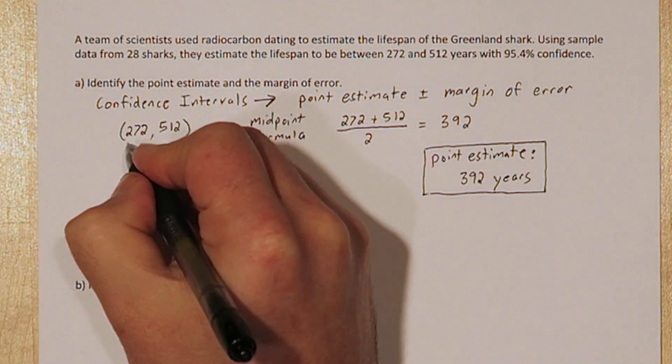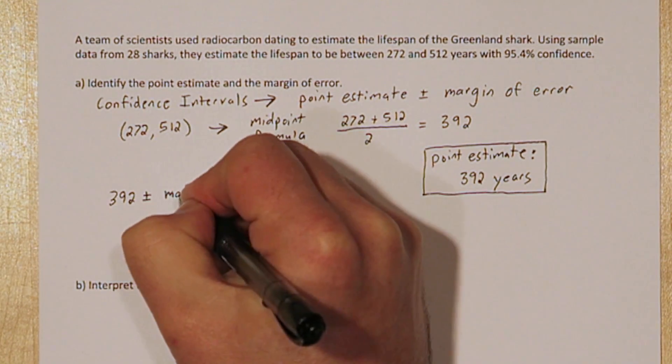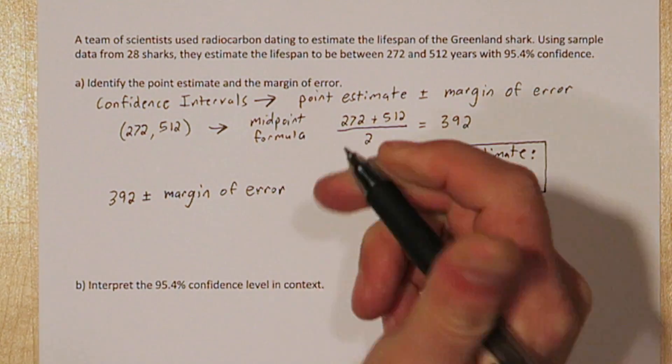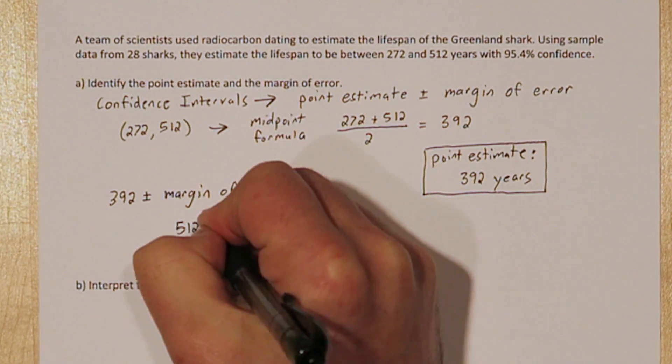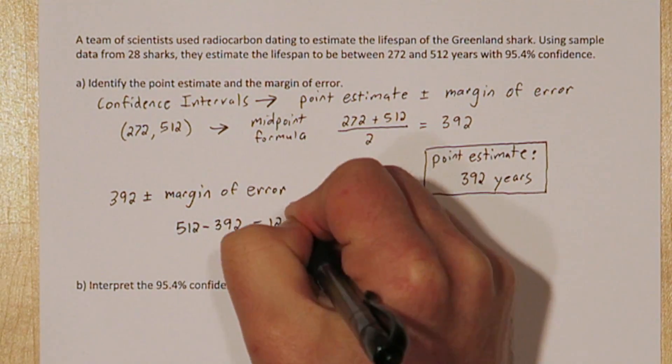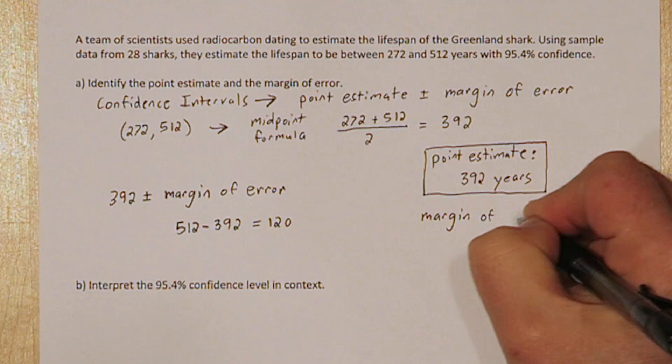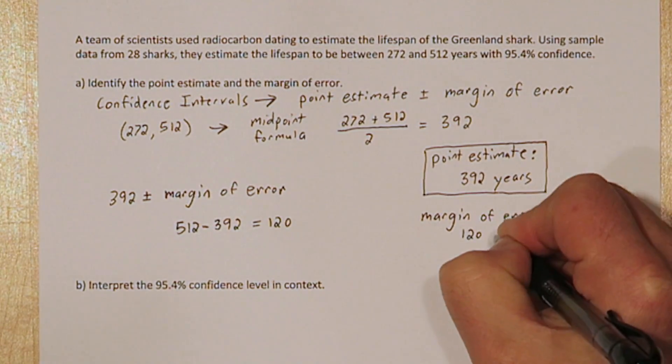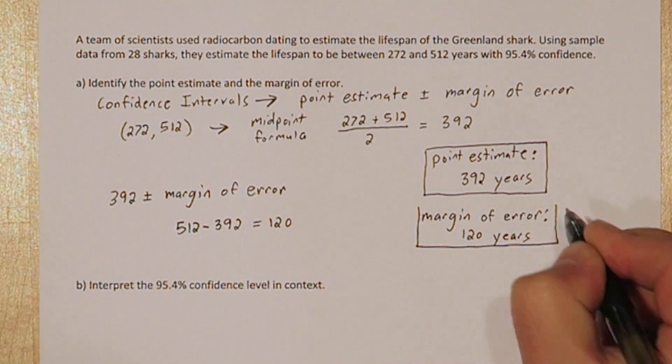Now that we know our point estimate is 392, if we add and subtract our margin of error, we'll get our interval. So let's take the upper limit of our interval, 512, and subtract out the point estimate. That leaves us with 120. That's our margin of error.